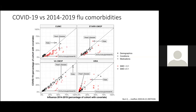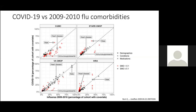This slide shows comorbidities with the x-axis as influenza and the y-axis as COVID-19. Points below the diagonal mean it's more common in influenza. At Columbia (CUIMC), most points are below the diagonal, meaning worse comorbidities in influenza-admitted patients than COVID-admitted patients. Similar patterns at Stanford and the VA. Korea is a little different with much younger patients. Looking at flu 2009-10 — H1N1 — points start coming above the line, so the pattern for COVID-19 looks more like H1N1 than traditional flu.